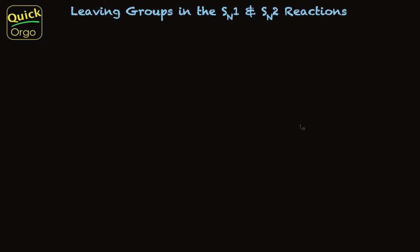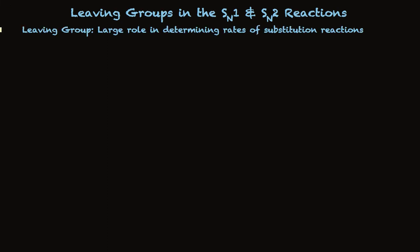The structure of the leaving group plays a big role in determining the rates of these SN1 and SN2 reactions that we've been talking about. This is easy to understand. Take a look.